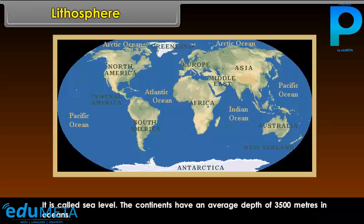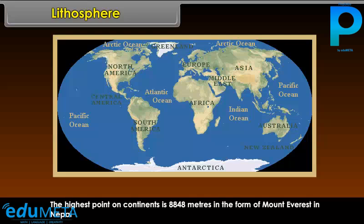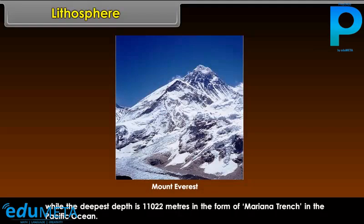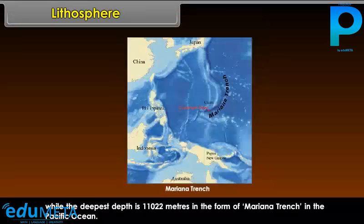The continents have an average depth of 3,500 meters in oceans. The highest point on continents is 8,848 meters in the form of Mount Everest in Nepal, while the deepest depth is 11,022 meters in the form of the Mariana Trench in the Pacific Ocean.